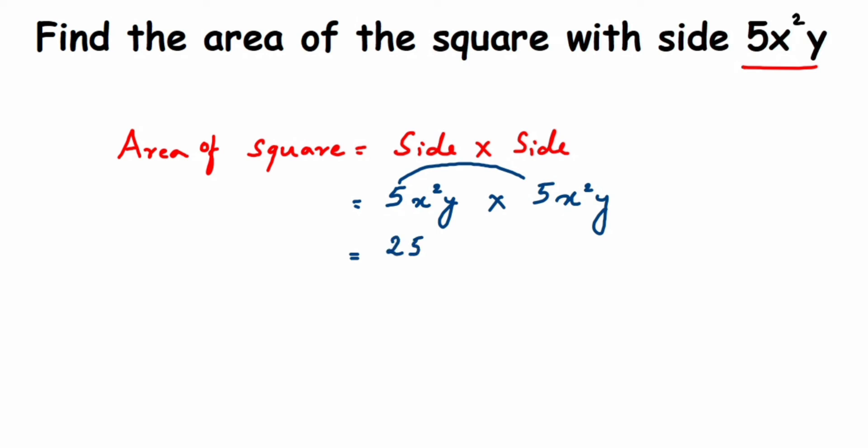We have x² and x², so x² multiplied by x² will give you x to the power 4. You just add the powers here.